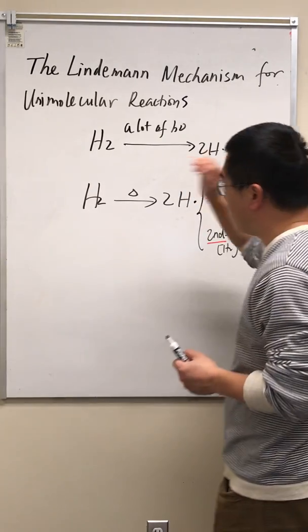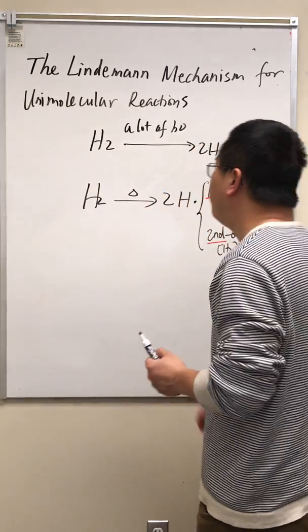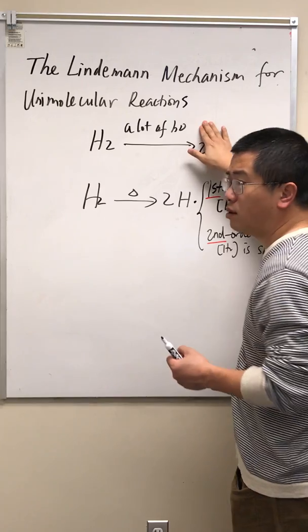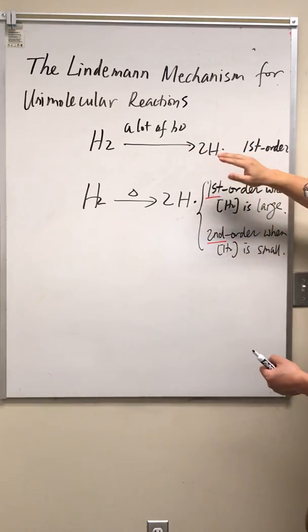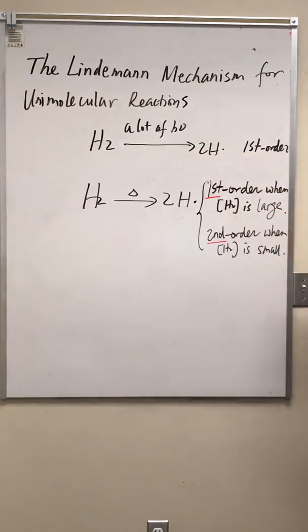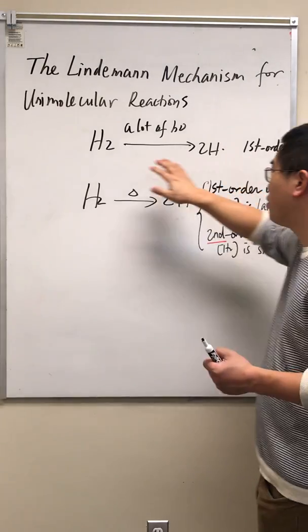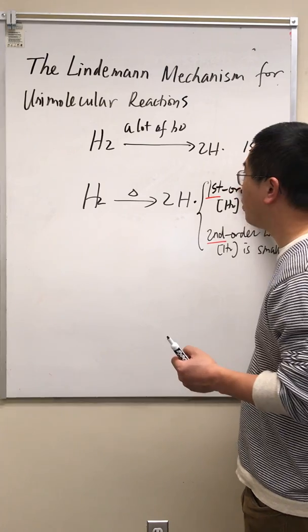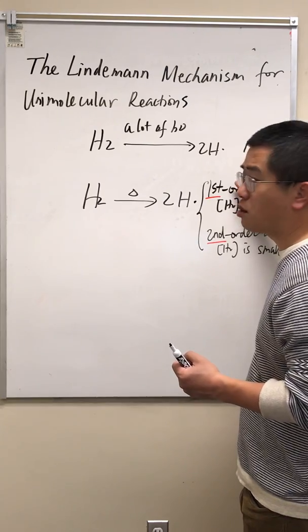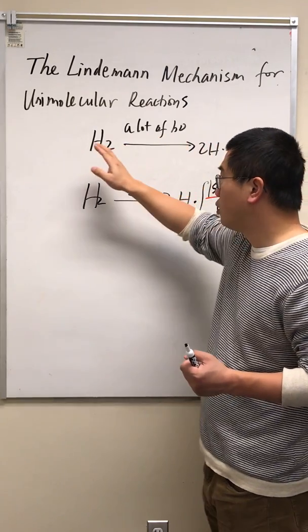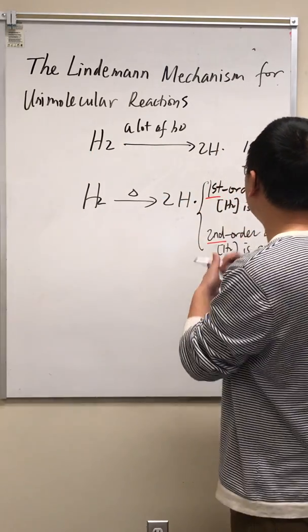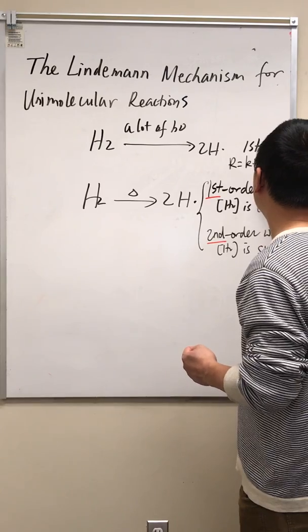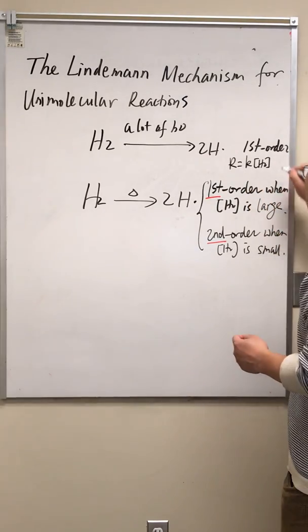Here's a very simple example. H2 absorbs a photon to produce two H-radicals. This may be considered a first-order elementary reaction, and the reaction rate is proportional to the concentration of H2 to the power of 1. So reaction rate equals K times the concentration of H2 to the power of 1.